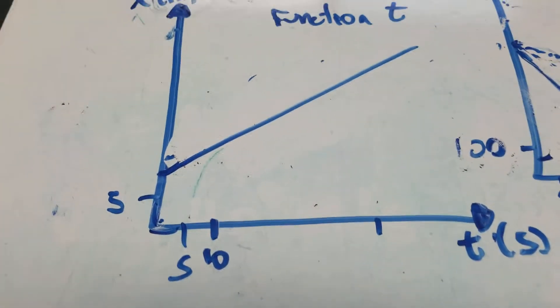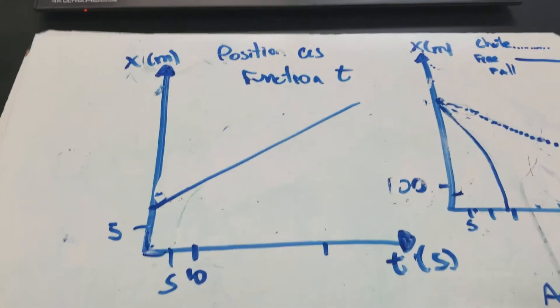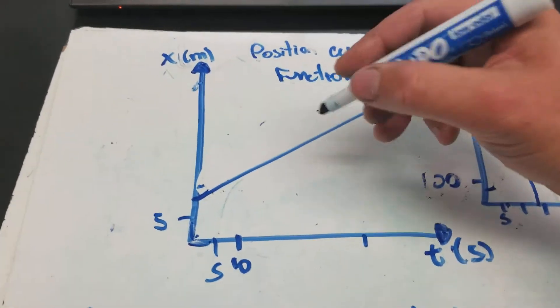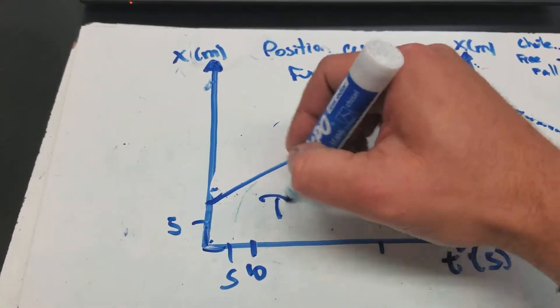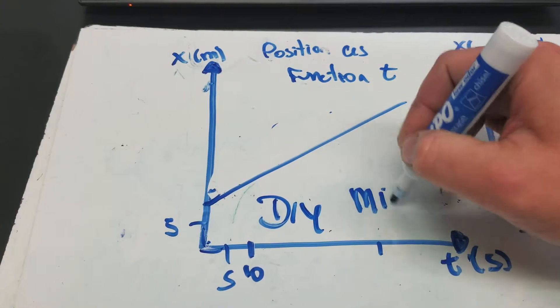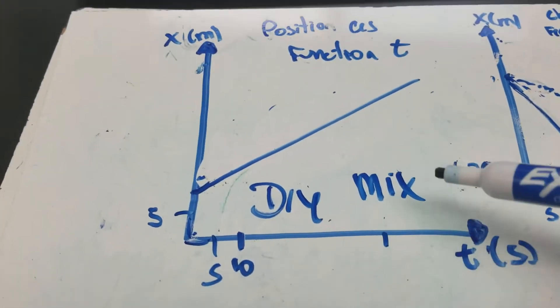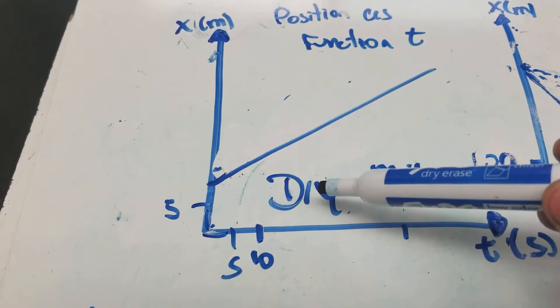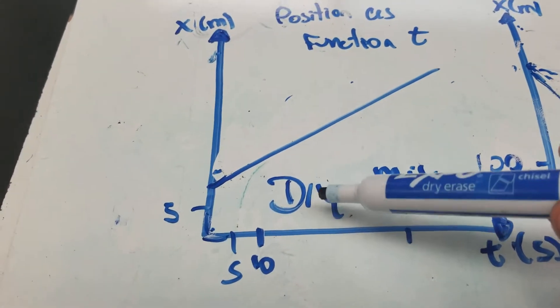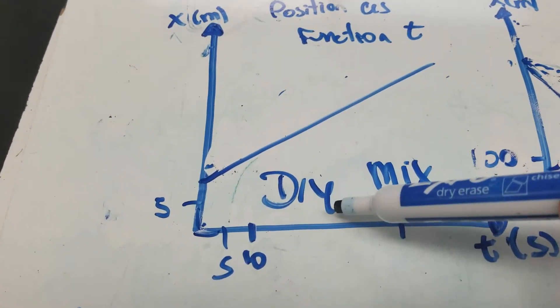And the last thing I want to talk about is this idea of what goes in each axis. So if you remember this thing, DRY MIX, then you will always remember that the dependent variable, which is the thing that responds in an experiment, the thing that you're measuring, goes in the y-axis.